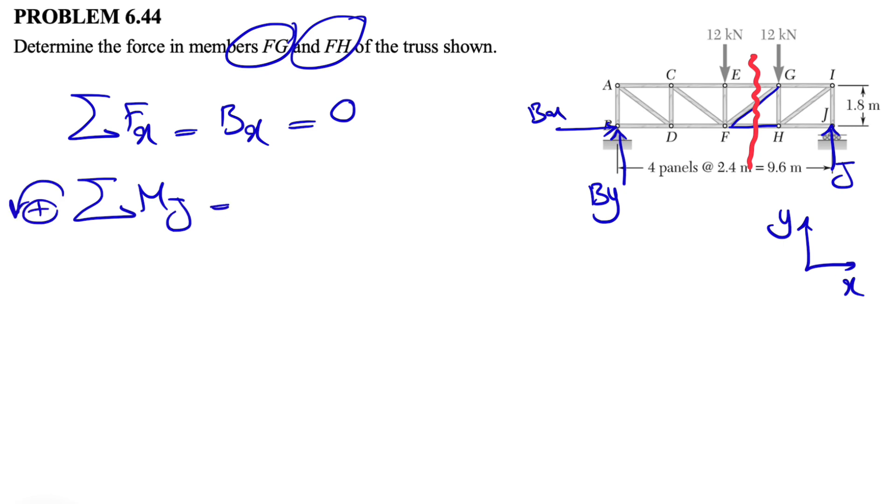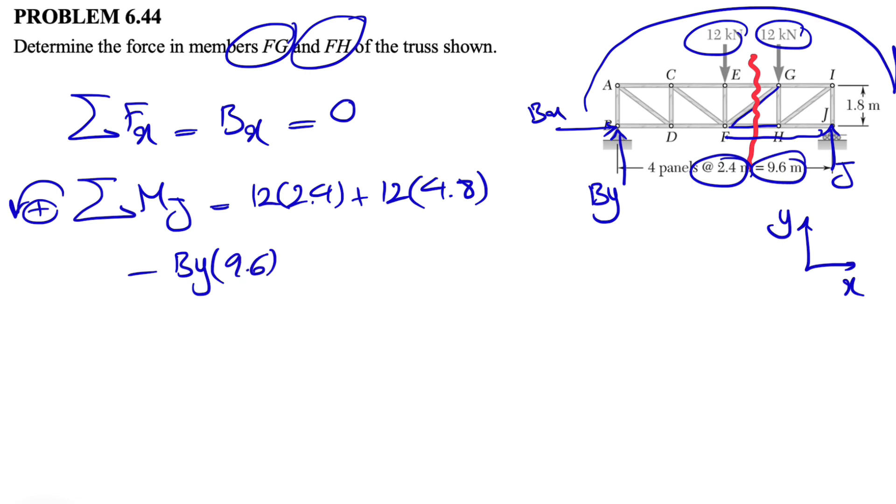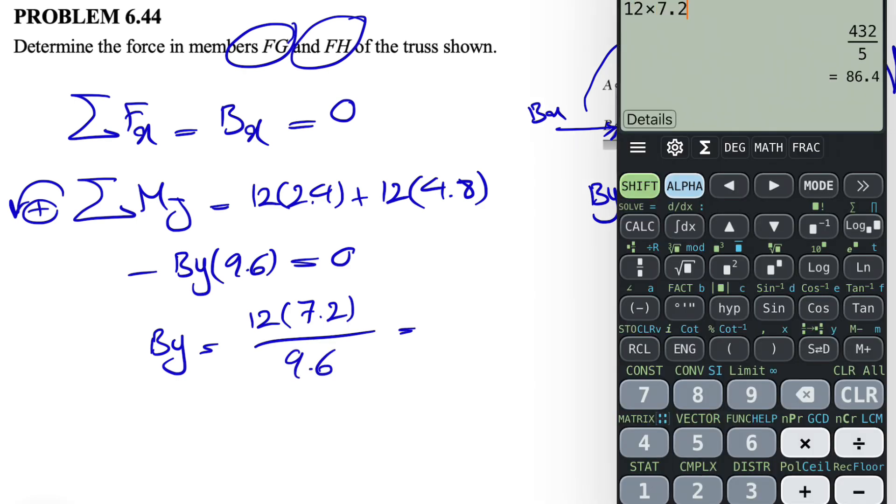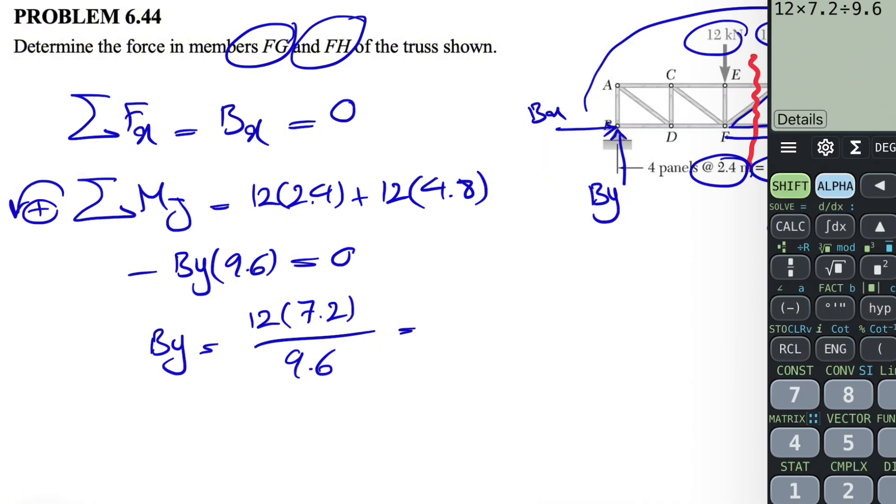So if we do for J, we have the moment of the 12 kN, which is going to be counterclockwise. So 12 times 2.4. We also have the moment of the other 12 kN. This time the distance will be from here. So 2 times 2.4. We know each panel is 2.4. So it's going to give us 4.8. And we have the moment of BY, which is a clockwise moment. So minus BY times the distance from B to J, which is the distance of four panels or 9.6. This will be equal to zero. So BY in here would be 12. We can factor 12 in here, 4.8 plus 2.4. 7.2 divided by 9.6. So 12 times 7.2 divided by 9.6. That's going to give us 9 kN.